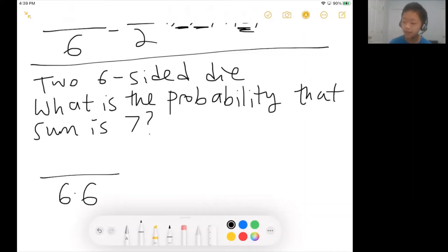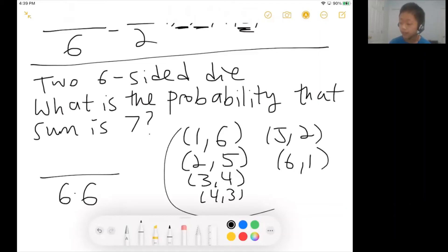So the first dice can land on a one and the second dice can land on a six. The first die can land on two, the second one can be a five, and then we can just list out three, four, four, three, five, two, six, one, where the first number represents the number rolled on the first die and the second number represents the number rolled on the second die. So we see that there are clearly six possible ways to obtain a sum of seven from the two dice. So the numerator would just be six.